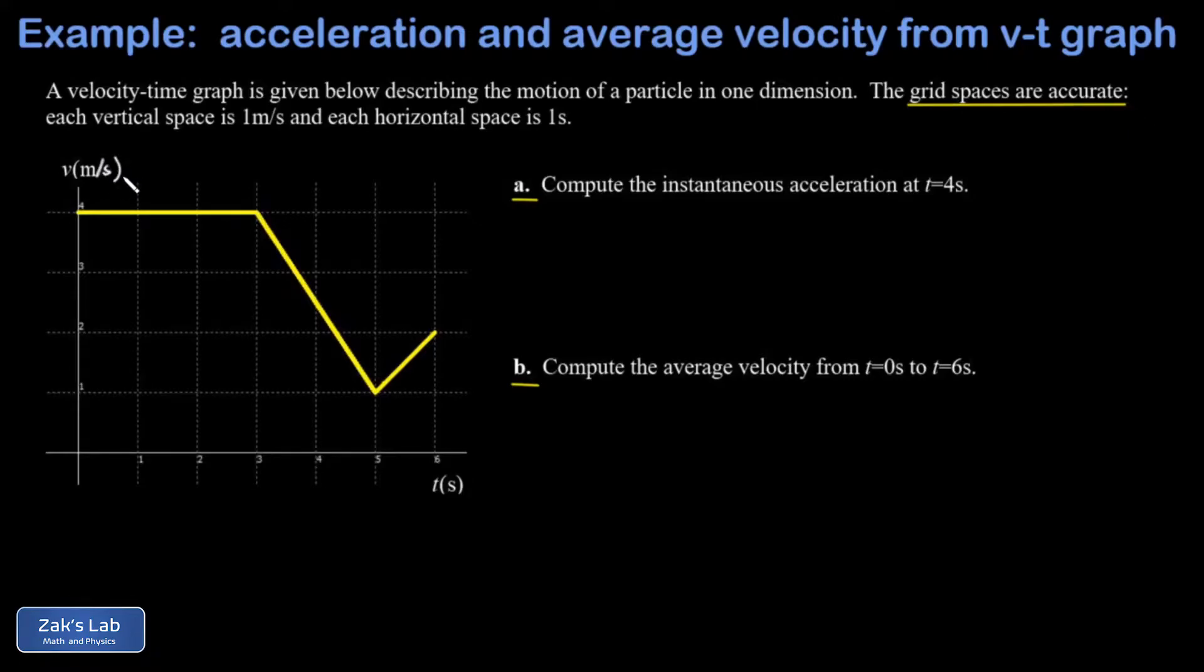In meters per second on the y-axis and then I have time in seconds on the x-axis. So you can trust the numbers you see in the graph. This is one, two, three, four meters per second for the velocities and then one through six seconds for the times.